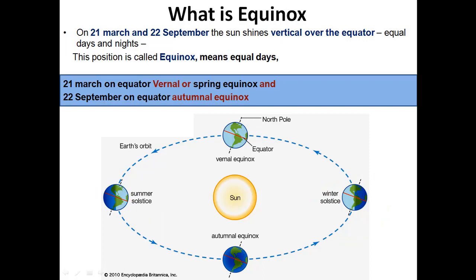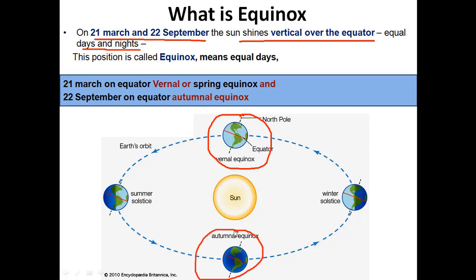Now we will understand what is equinox. On 21st March and 22nd September, the sun shines vertical over the equator, giving equal days and night. The position is called equinox, meaning equal days. On 21st March, the direct rays of the sun fall on the equator at 90 degrees, and earth experiences equal length of day and equal length of night — also called vernal or spring equinox. On 22nd September, the direct rays of the sun also fall on the equator, giving equal length of day and night — this is called autumnal equinox.